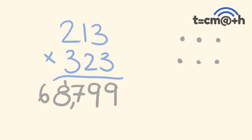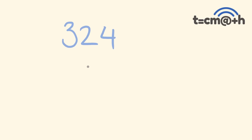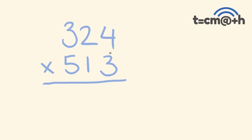Let's look at another question: 324 times 513. The first ones you're going to multiply are the two units. 4 times 3 is 12 — put the 2 down and carry the 1. The next ones we multiply are 2 by 3 and 4 by 1. So 2 times 3 is 6, 4 times 1 is 4. 6 plus 4 plus that carried 1: 6 plus 4 is 10, plus 1 is 11 — put the 1 here and carry the 1 over.